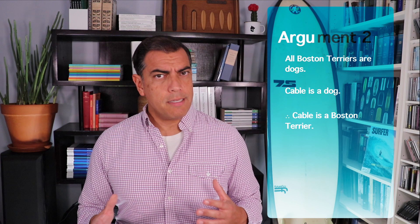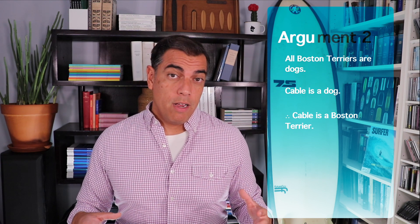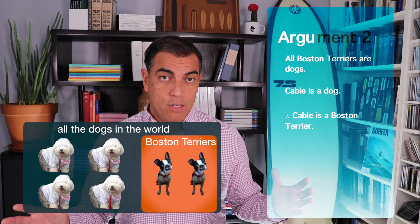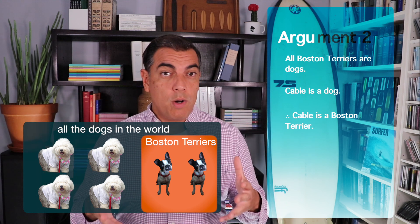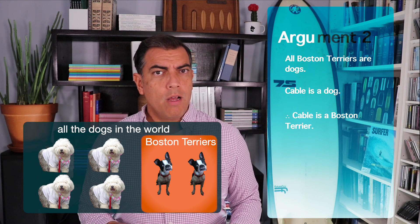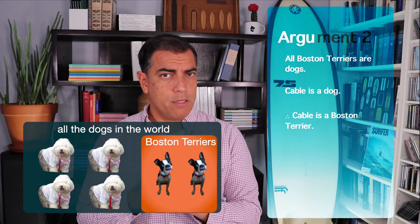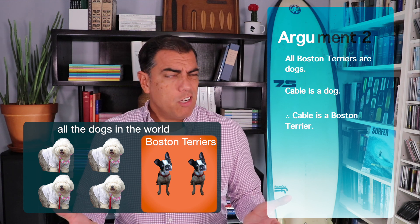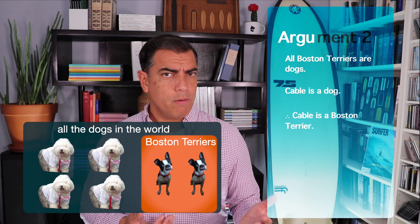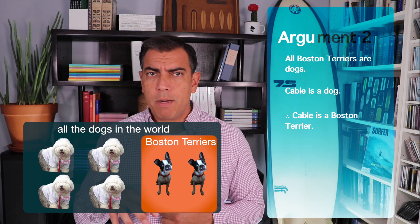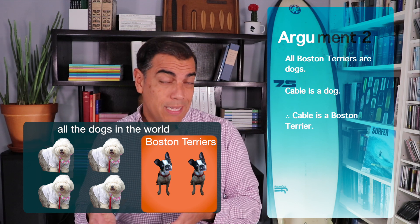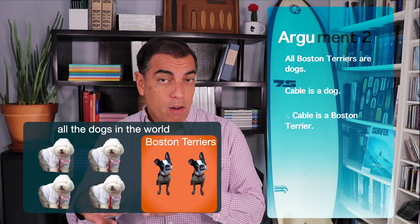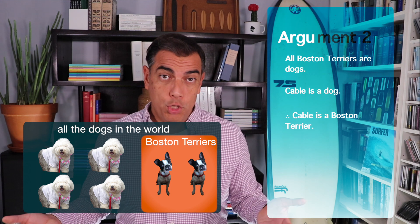Is this argument NTP — Necessary Truth Preserving? To help understand, I'm going to give you a little diagram on your screen. Imagine these are all the dogs that exist in the universe. Now, assume these premises are true: all Boston Terriers are dogs and Cable is a dog. Given those premises, is the conclusion true? Well, it could be true, but it could also be false. Cable might be one of those Boston Terriers, but saying he is a dog doesn't necessarily put him in that category.